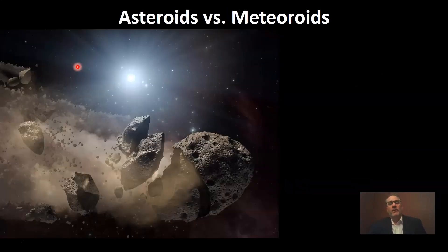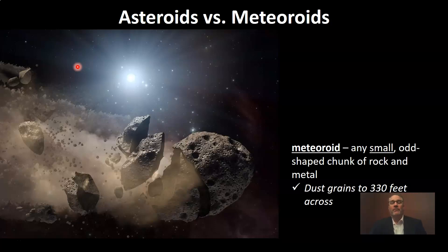Meteoroids versus asteroids — in reality, I think the most accurate way to describe these is space rocks. Let's start with meteoroids. A meteoroid is any small — notice the word small is underlined — odd-shaped chunk of rock and metal. All meteoroids are made of rock and metal. They are generally small, meaning under 330 feet. Now you may think 330 feet — that's a football field. But as compared to the size of planets and other objects, that's relatively small. They can also be much, much smaller — they can be the size of a grain of dust. A meteoroid: any small, odd-shaped chunk of rock and metal.